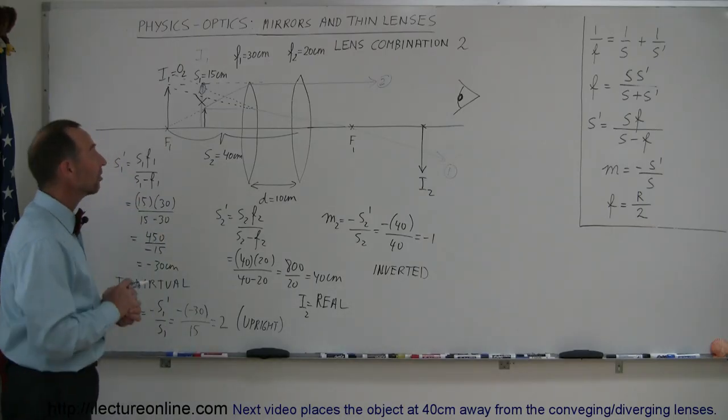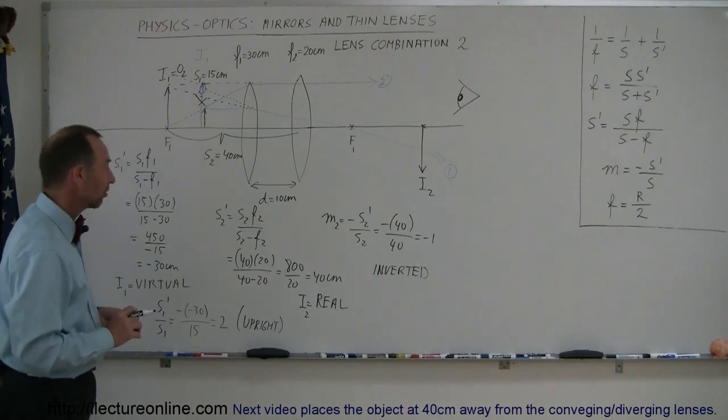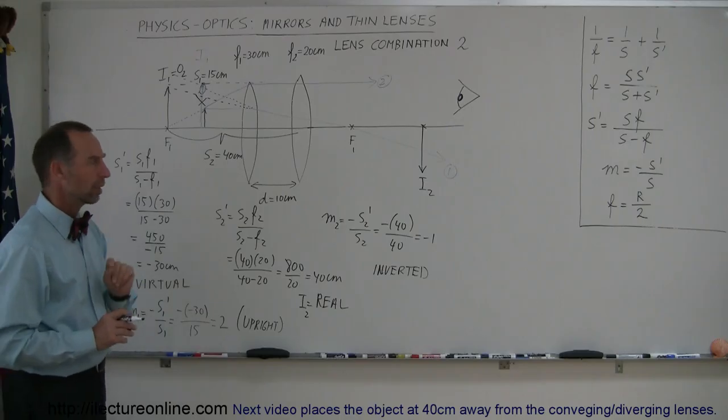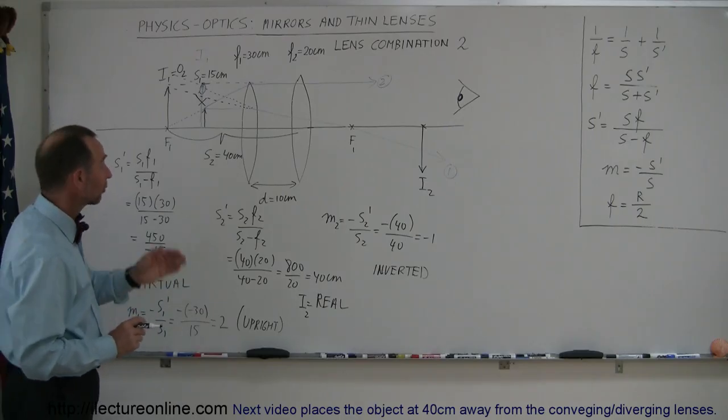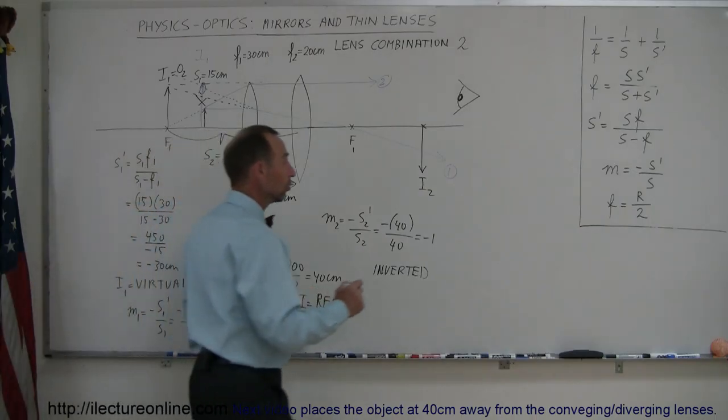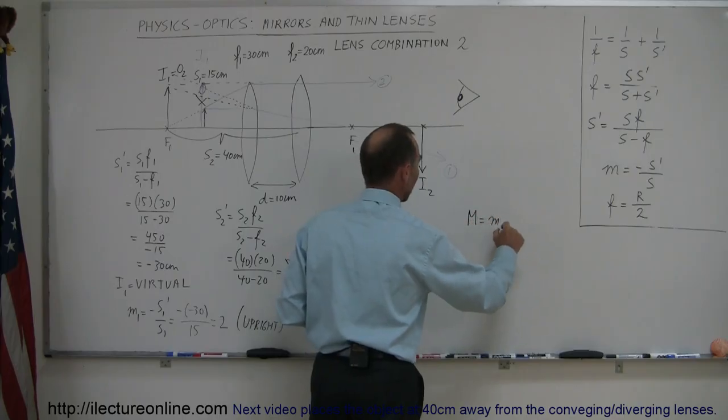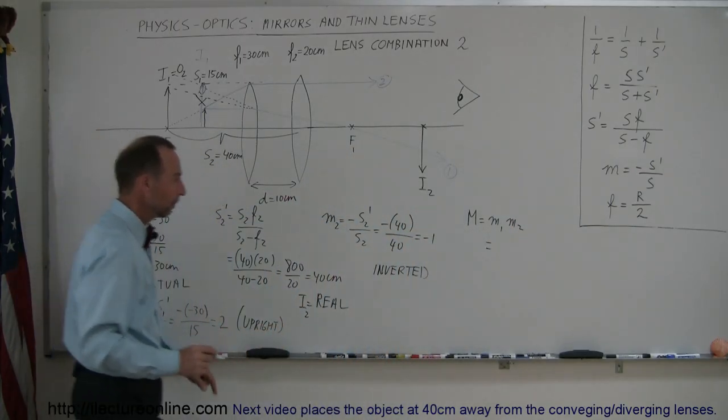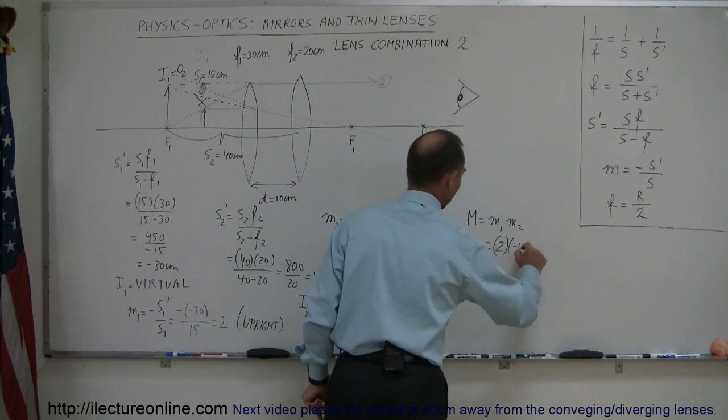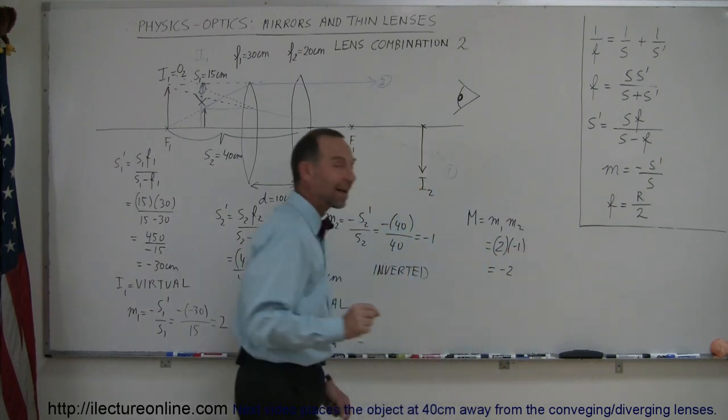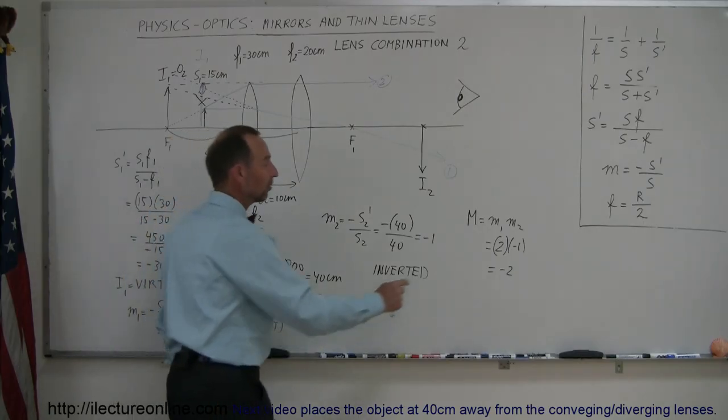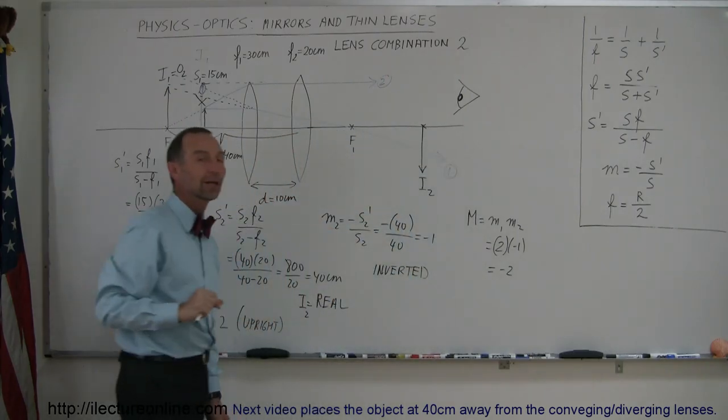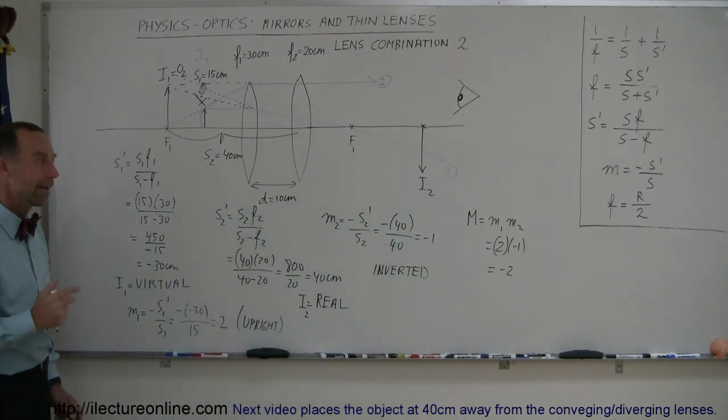There we go, that is how you find the first and the second image of a double-lens system like that, when you put the object inside the focal length of the first image. Now we have one more thing to do, what is the size of the image, the final image relative to the original object? To do that, we simply have to multiply the two m's, m1 times m2, m1, we found to be equal to 2, and m2 was equal to a negative 1, so that's equal to negative 2, which means the final image, the second image, is twice the size of the original object, and since it's negative, it is inverted relative to the original object. And that's the problem.